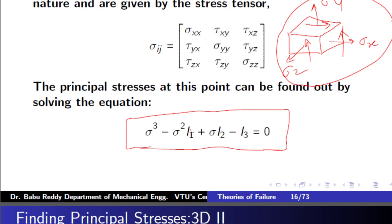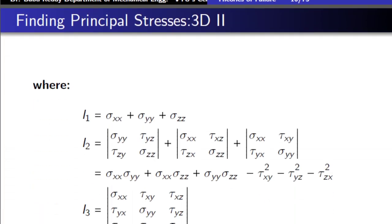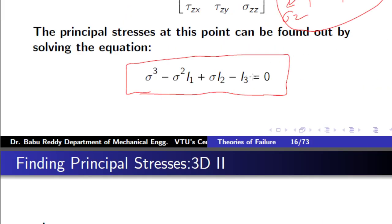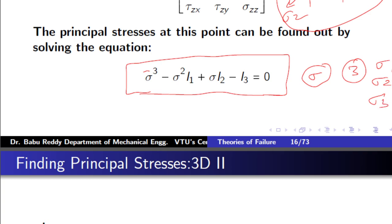The cubic equation contains I1, I2, I3, which are called stress invariants given by specific formulas. Given sigma x, sigma y, sigma z, tau xy, tau yz, and tau zx, you find I1, I2, I3 and substitute them into the equation to solve for sigma. Since it is a cubic equation, you get three values: sigma 1, sigma 2, and sigma 3 — these are the principal stresses.